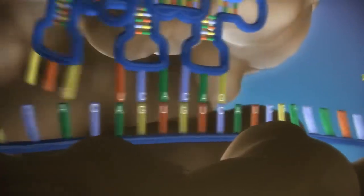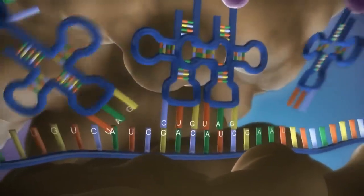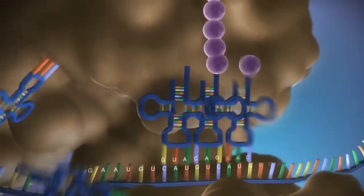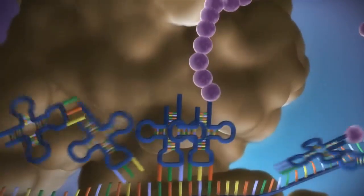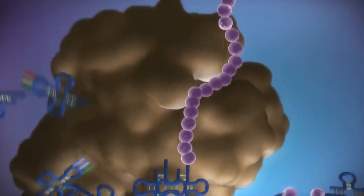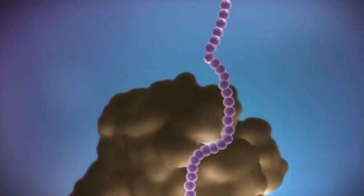The messenger RNA is read three bases at a time. As each triplet is read, a transfer RNA delivers the corresponding amino acid. This is added to a growing chain of amino acids.